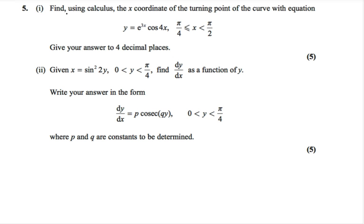Question 5. Part I asked us to find, using calculus, the x-coordinate of the turning point of the curve with equation y equals e to the 3x cos 4x, where x is between pi over 4 and pi over 2. Give your answer to four decimal places.